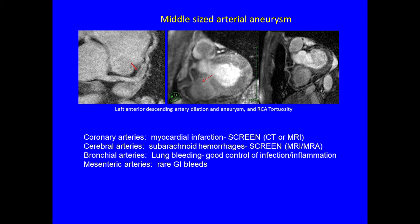Since that time, we screen all of our patients with MRI or CAT scan once they can lie still, looking at the coronary arteries for aneurysms. We've found a number of patients with wiggly arteries or aneurysms as they get older. It's important to screen so we can put patients on medicines to try to prevent heart attacks. We also screen for cerebral artery aneurysms, and bronchial artery aneurysms can lead to lung bleeding.